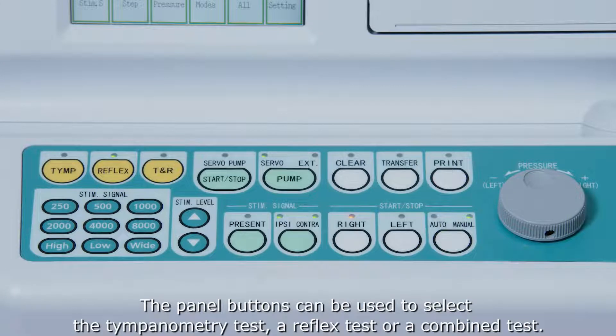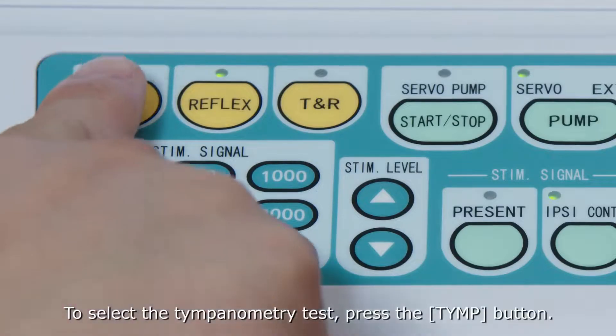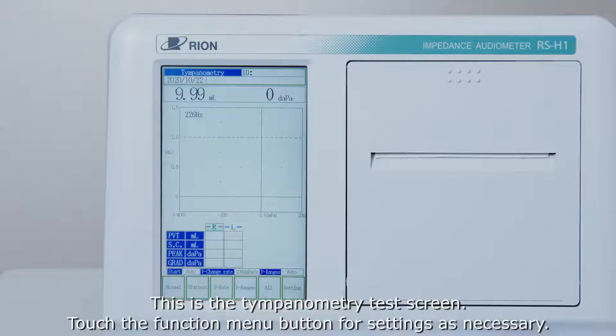The panel buttons can be used to select the tympanometry test, a reflex test, or a combined test. To select the tympanometry test, press the tymp button. This is the tympanometry test screen. Touch the function menu button for settings as necessary.